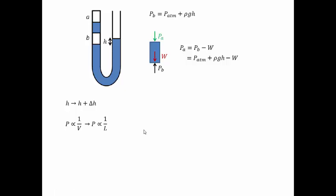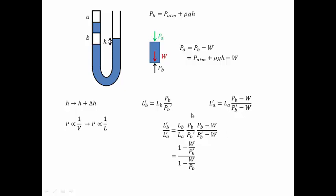Let's look at what happens to the length of air column B due to this change in pressure. From this equation, we can construct equations relating the new air column lengths to the old lengths for both B and A. Taking the ratio of the new lengths of both air columns, and knowing that LB equals LA initially, we find the final ratio as shown here.